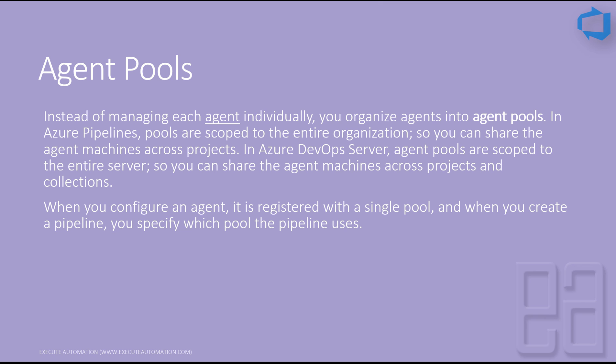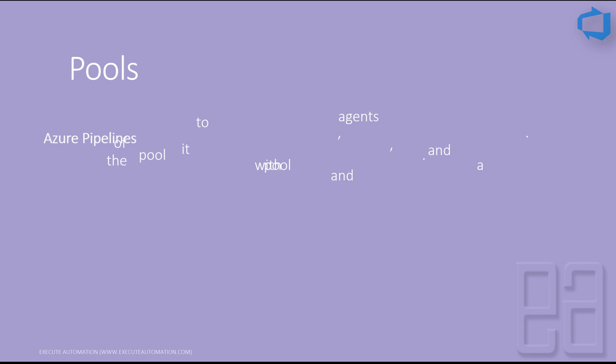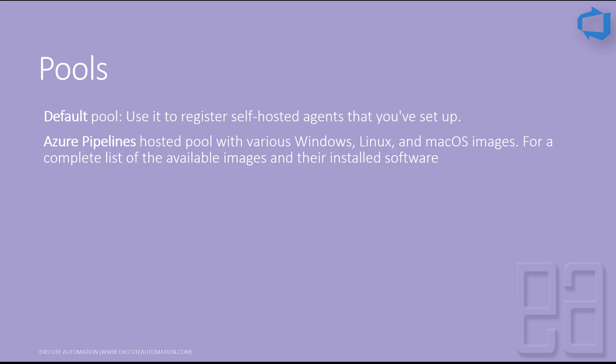When you configure an agent, it is registered with a single pool, and when you create a pipeline you specify which pool it uses. In Project Settings in Azure DevOps, you can see that by default self-hosted agents sit in the Default pool, while the Azure Pipelines hosted pool contains Microsoft hosted agent images for Windows, Linux, and macOS.